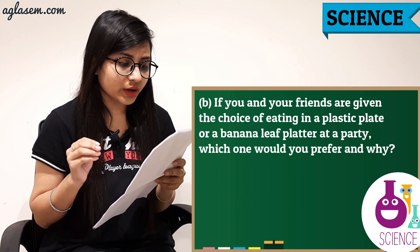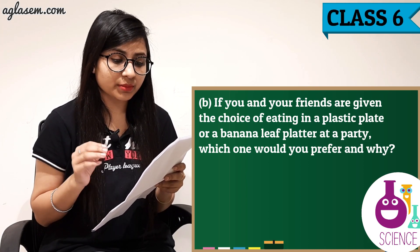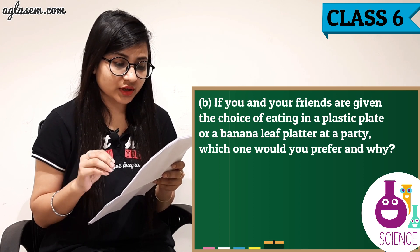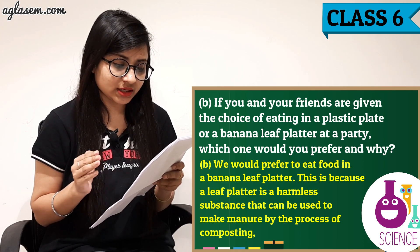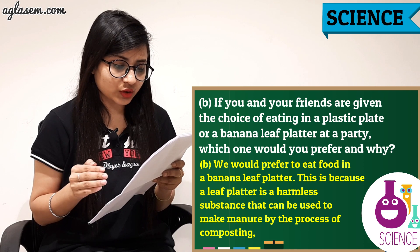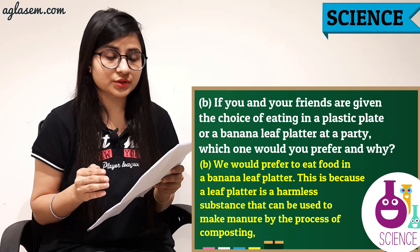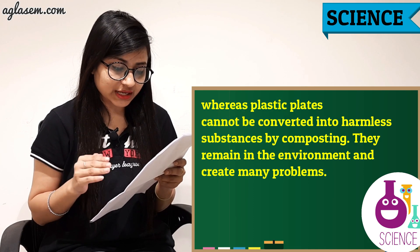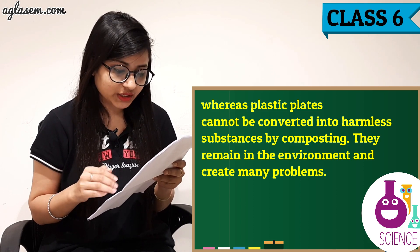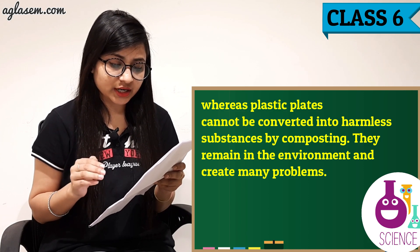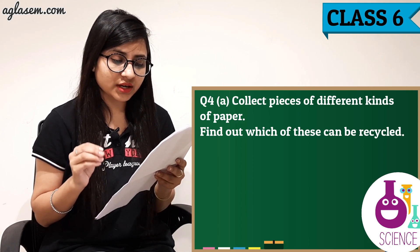Question 3b: If you and your friends are given the choice of eating in a plastic plate or a banana leaf platter at a party, which one would you prefer and why? The answer is: we would prefer to eat food in a banana leaf platter. A leaf platter is a harmless substance that can be used to make manure by the process of composting, whereas plastic plates cannot be converted into harmless substances by composting and remain in the environment, creating many problems.